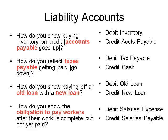How do you reflect taxes getting paid? If you owe taxes, taxes payable goes down — a liability going down requires a debit. You're making a payment so cash goes down; cash is an asset, and to get an asset to go down you credit it. How do you show paying off an old loan with a new loan? The new loan goes up — that's a credit. The old loan goes down — that's a debit. Both are liabilities.